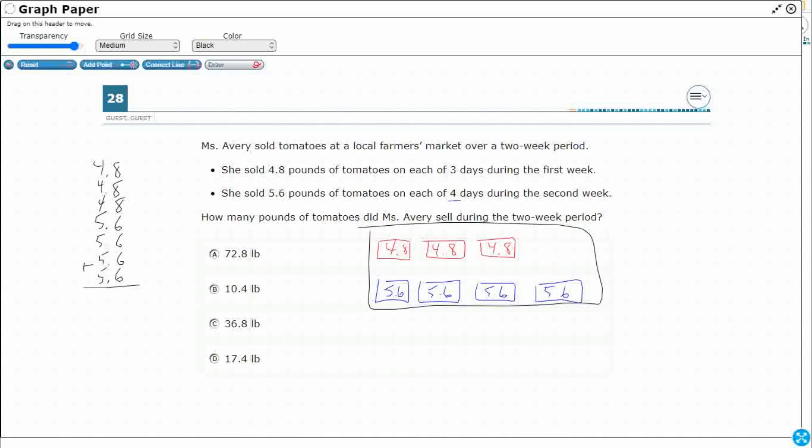Typically, when we see something like that, we think, can we make it easier? And yes, we can, because I can also write this as an equation. So when we see 4.8 pounds of tomatoes on each, each means equal groups. And when you see equal groups, you should automatically think, we're going to either multiply or divide.